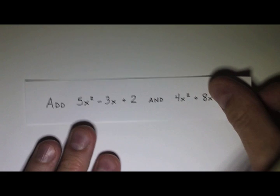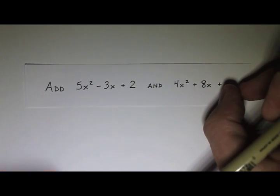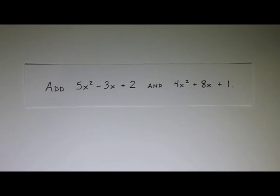So let's look at an example. We have two polynomials here that we want to add. We want to add 5x squared minus 3x plus 2 and 4x squared plus 8x plus 1.